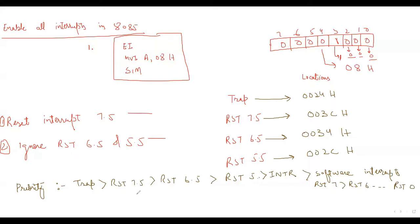Priority means that if two interrupts arrive simultaneously, the higher-priority one is handled first. Among all interrupts, Trap has the highest priority. Now let's discuss each of these vector interrupts one by one, starting with Trap.